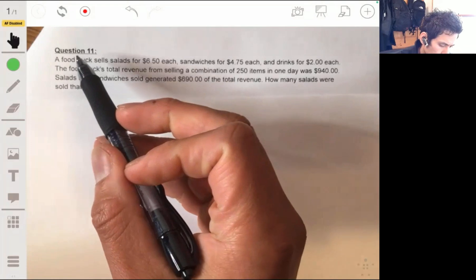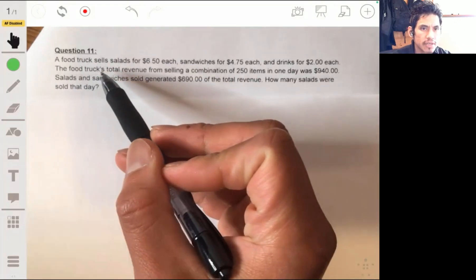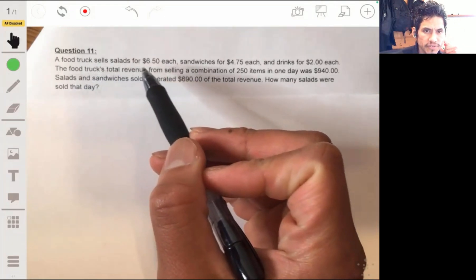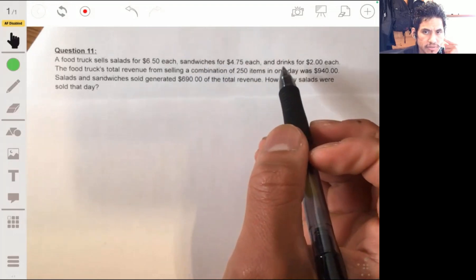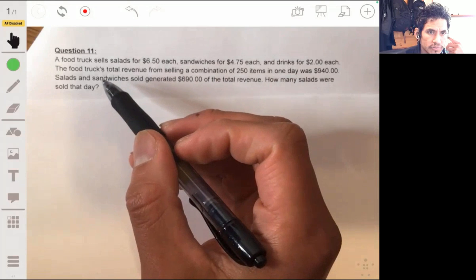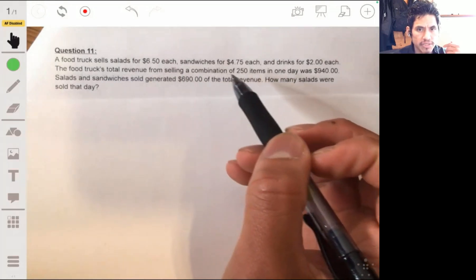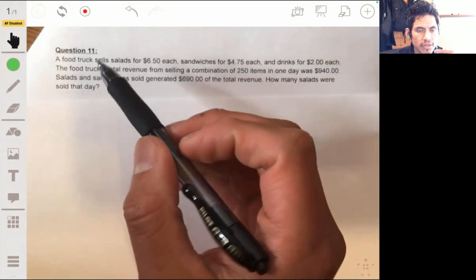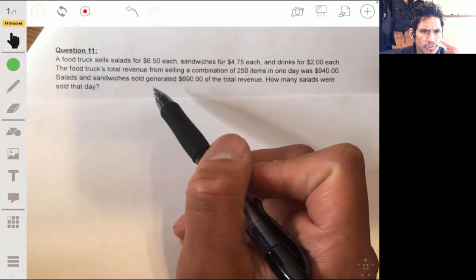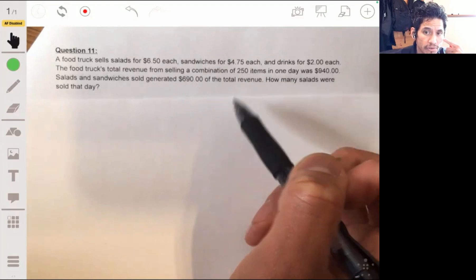Alright, here in question 11, we have a food truck sells salads for $6.50 each, sandwiches for $4.75 each, and drinks for $2 each. The food truck's total revenue from selling a combination of 250 items in one day was $940. Salads and sandwiches sold generated $690 of the total revenue.